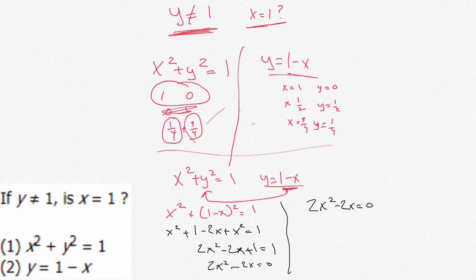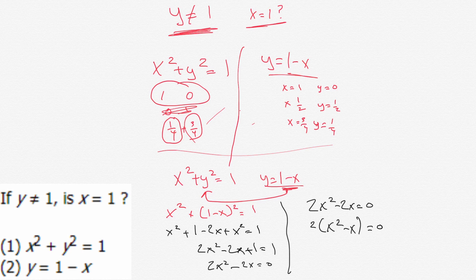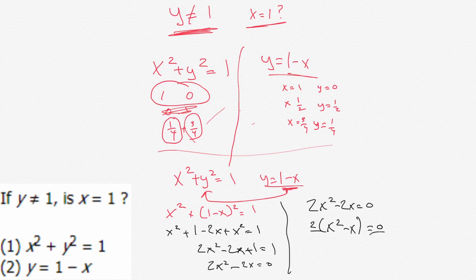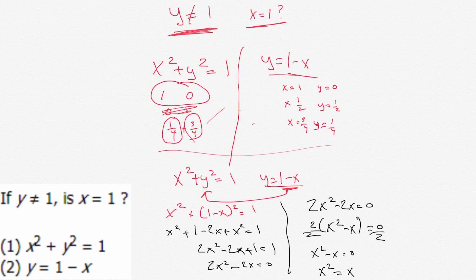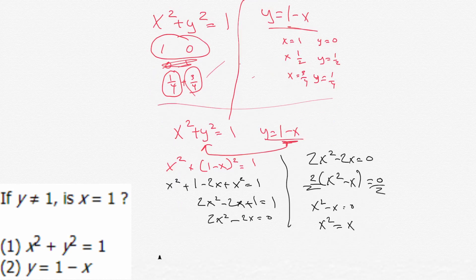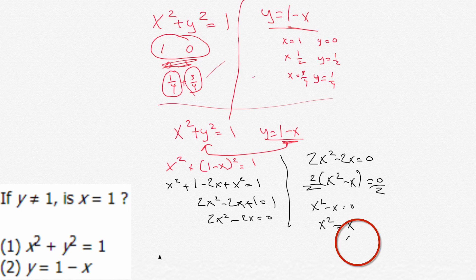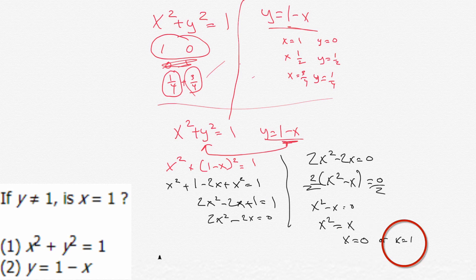We get two x squared minus two x equals zero. A couple ways we could do this. We could factor out the two, and we get x squared minus x equals zero, and then divide two to each side, so we can get rid of the two, we get x squared minus x equals zero, x squared equals x. So now we know that x squared equals x, so then therefore, x could equal zero, or x could equal one.